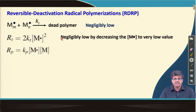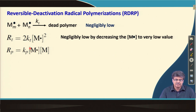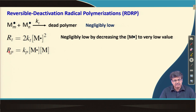Now, what is the fallout of this step? We also know that the rate of propagation is directly proportional to the concentration of propagating radicals in the system. And if we reduce this concentration, then obviously the polymerization rate will also come down.